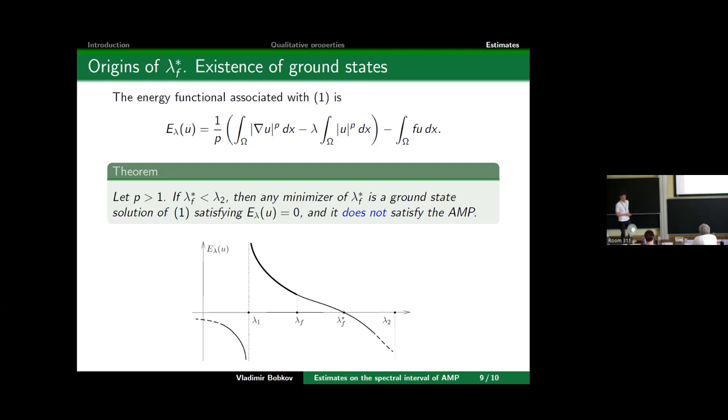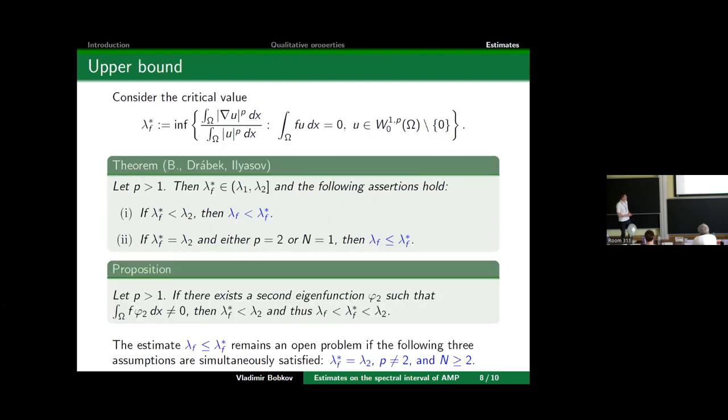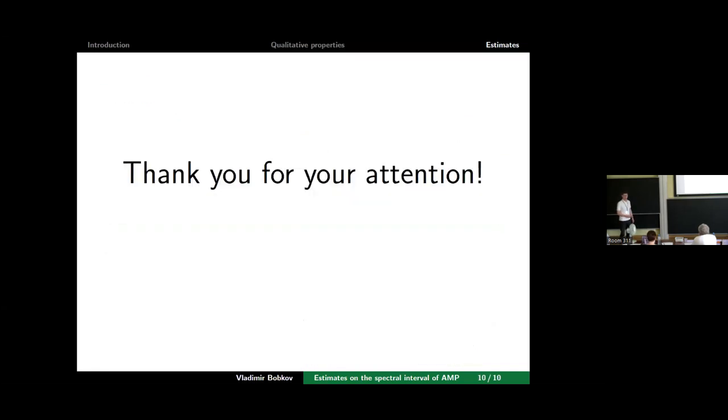It intersects the zero level exactly at the point λ_f*, and only the minimizer of λ_f* is a ground state solution with zero energy level. Moreover, any minimizer is sign-changing, so it doesn't satisfy the anti-maximum principle. Why sign-changing? Because of that constraint. It can be shown that it's not strictly negative because f is non-negative, and to equate that integral to zero you must have either a zero measure set or have to be sign-changing. Basically, this is the story. Thank you for your attention.